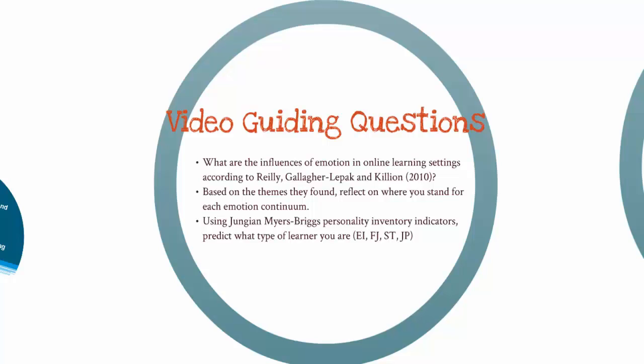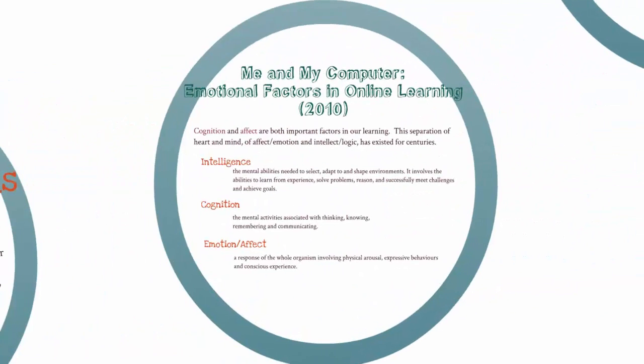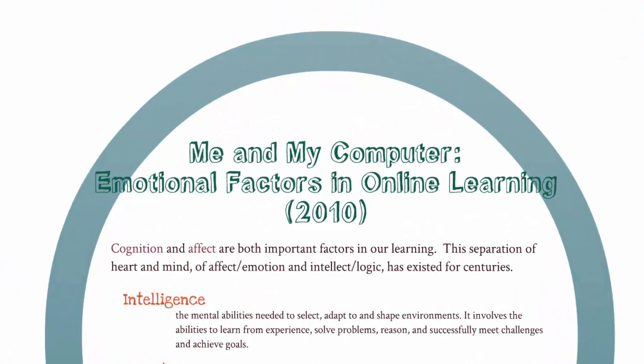In the article, 'Me and My Computer: Emotional Factors in Online Learning,' the authors refer to the fact that cognition and affect, or emotion, are both important factors in our learning. This separation of heart and mind — of affect-emotion and intellect-logic — has existed for centuries.